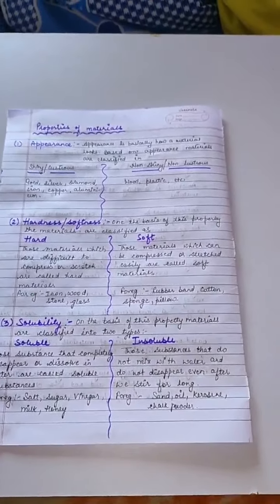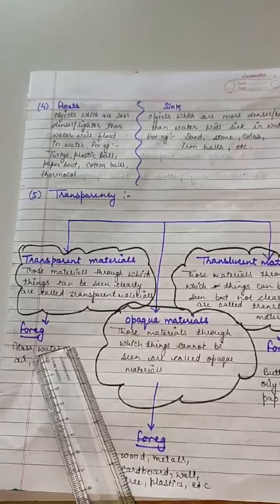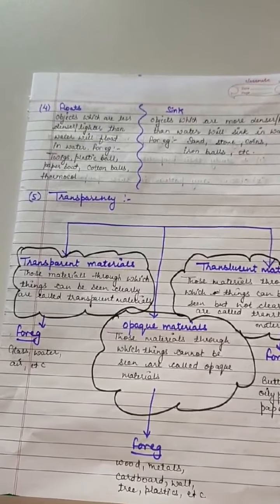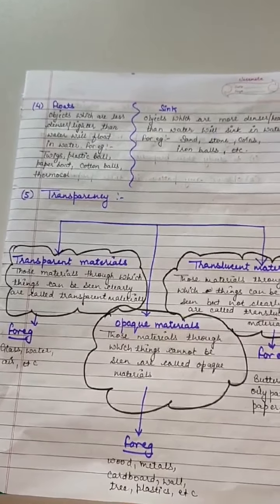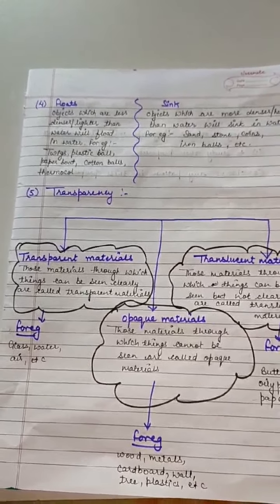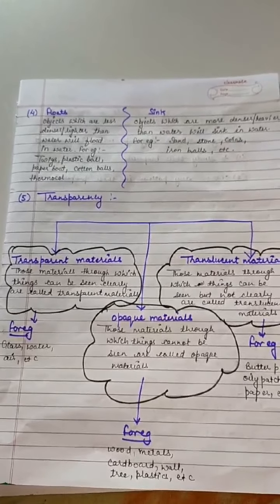The next property is transparency. On the basis of this property, materials are classified as transparent, opaque, and translucent materials. Transparent materials are those through which things can be seen clearly — for example, glass, water, and air. If you try to see through water or a glass, you can see clearly because these are transparent materials.